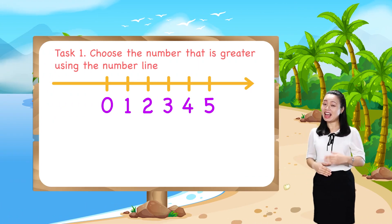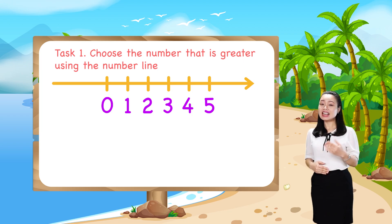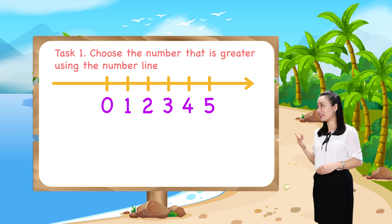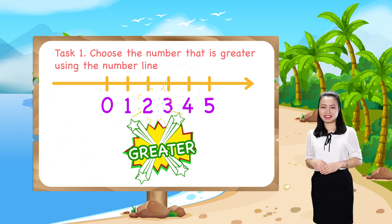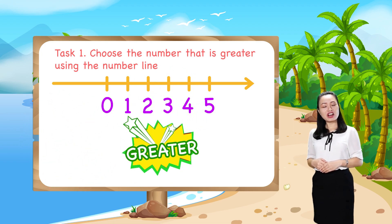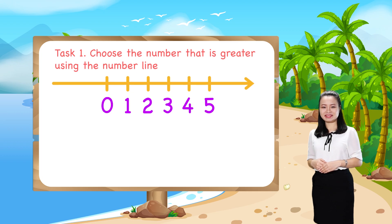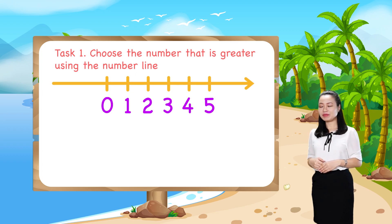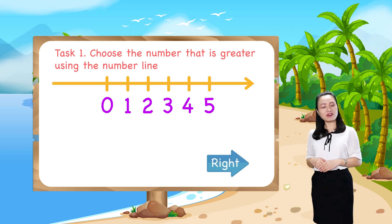Now let's find the answers together. To choose the number that is greater, first look at the number line, then decide which number is to the right of the other number.